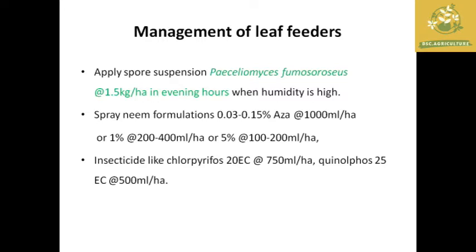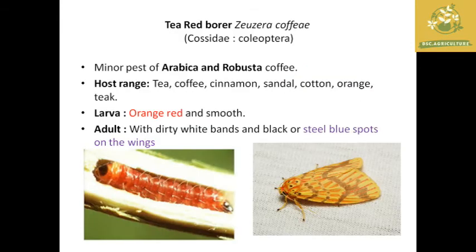The common management for leaf feeders includes applying spore suspensions when there is high humidity, and spraying neem formulations at 0.03 to 0.15% at 1000 ml per hectare, or 1% at 400 ml per hectare, or 5% at 100 to 200 ml per hectare, based on the incidence in the field, along with insecticides like chlorpyrifos or quinalphos at the recommended dosage.